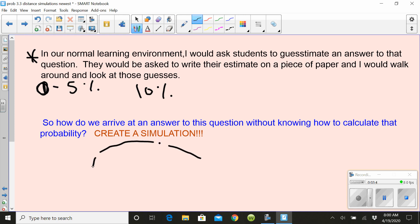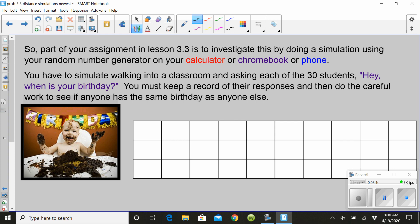So how do we arrive at an answer to the question without knowing how to calculate an answer for that question? We create a simulation. That's what you do in the first exercise in your assignment. If you open up the exercise document that's attached to Lesson 3-3, you are going to see that on the first page of that assignment, there are two grids that look like this. There's 30 cells in each grid because there's 30 students in the classroom. We're going to walk into two different classrooms and ask everybody when's your birthday, and we're going to record when those birthdays are and then see if anybody has the same birthday as anybody else.